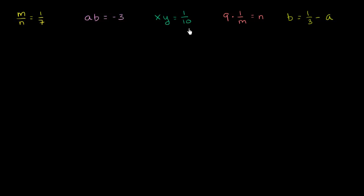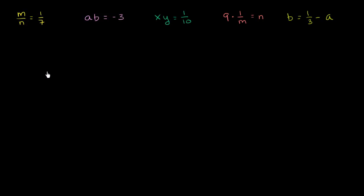I've written some example relationships between two variables — in this case between m and n, between a and b, between x and y. What I want to do in this video is see if we can identify whether the relationships are a direct relationship, whether they vary directly, or maybe they vary inversely, or maybe it is neither. So let's explore it a little bit.